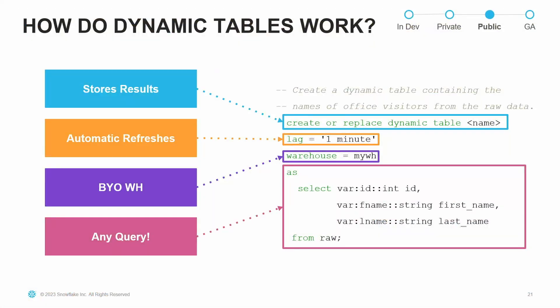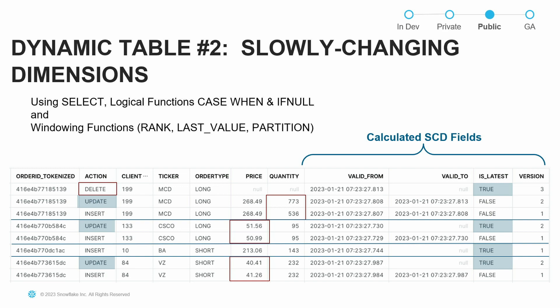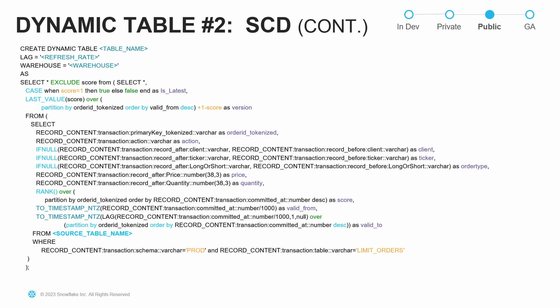This shows these two capabilities working together in an end-to-end use case. When you create a dynamic table, you define it just like a regular table except you add the word 'dynamic' and specify the lag — how often you want it to refresh and stay current. It uses an incremental refresh process, tracking how many records have been added since the last refresh and only processing those new records. So even for aggregations, slowly changing dimensions, or current orders, it only processes what has changed.